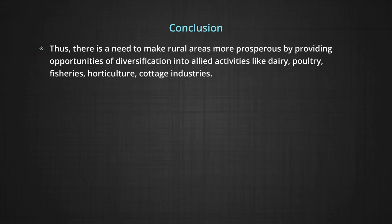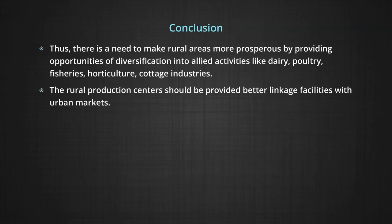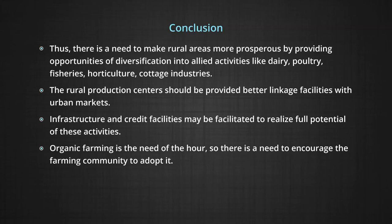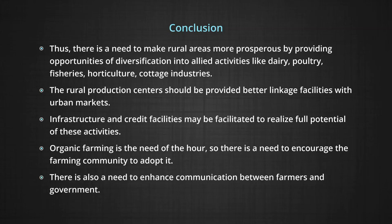In conclusion, there is a need to make rural areas more prosperous by providing opportunities for diversification into allied activities like dairy, poultry, fisheries, horticulture, and cottage industries. Rural production centers should be provided better linkage facilities with urban markets, and infrastructure and credit facilities should be improved to realize the full potential of these activities. Organic farming is the need of the hour and the farming community should be encouraged to adopt it. There is also a need to enhance communication between farmers and government.